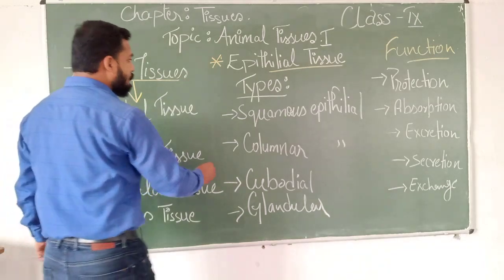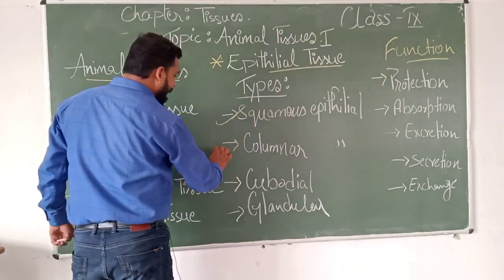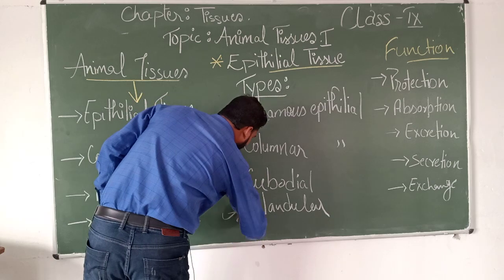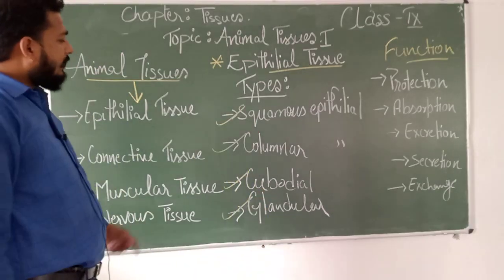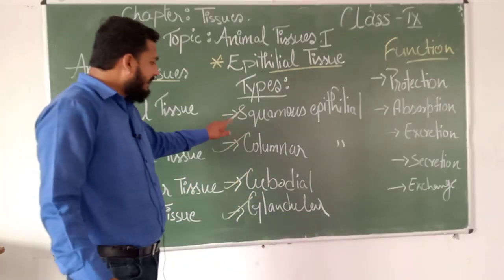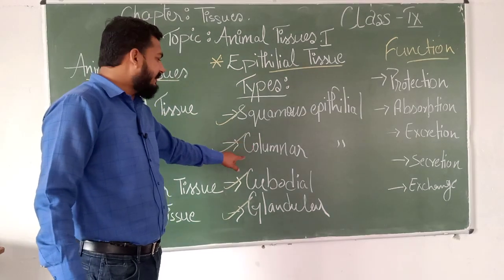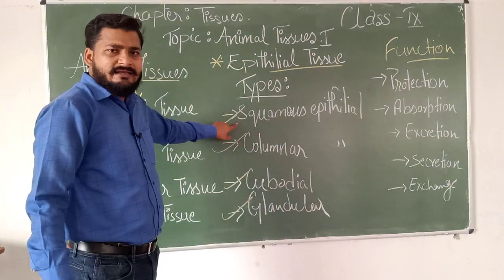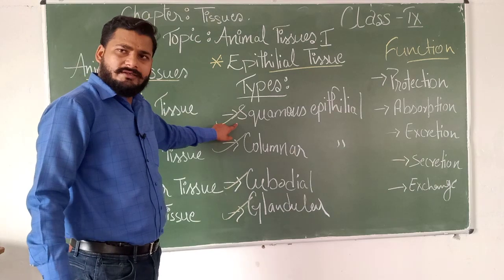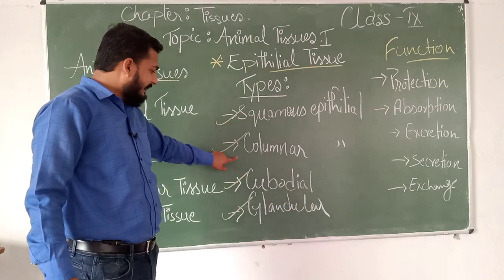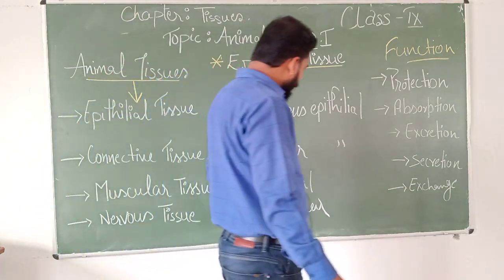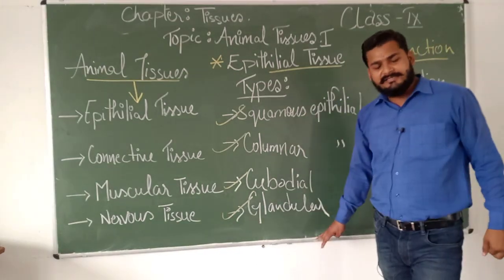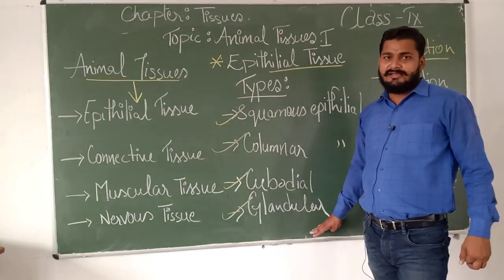There are four types of epithelial tissues: squamous epithelial, columnar, cuboidal, and glandular. These all have main differences in their structures. Squamous epithelial is found over the organs, cuboidal is present in different glands.